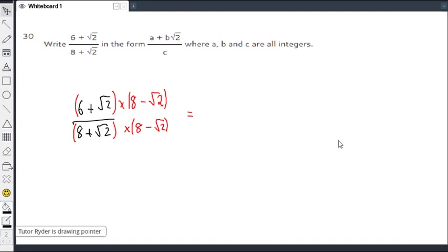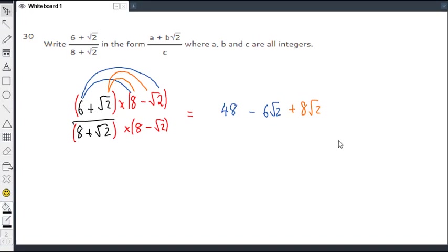So let's do the top first. So on the top we're going to get 6 times 8. Well that's pretty straightforward. That's just 48. We're then going to get 6 multiplied by minus root 2, which is going to be minus 6 root 2. We're finished with the 6 now. So we're going to come on to this root 2. So we're going to root 2 times 8. Well that's just plus 8 root 2. And finally root 2 times minus root 2. That's just going to remember root 2 times root 2 is 2. And then plus times minus is a minus. So we're going to get minus 2.